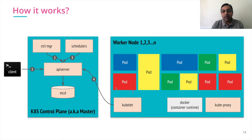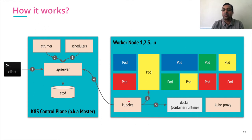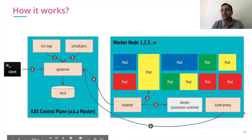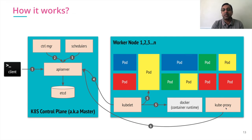Kubelet, which is part of the worker nodes, keeps listening for requests via the API server. When a new request is assigned to a worker node, kubelet picks up that request and uses Docker runtime to spin up new pods and eventually containers. If new pods are spun up, new IPs need to be assigned and routes defined — all that work is done by kubeproxy. Kubeproxy keeps listening for state changes and sets up IP table rules so that pod-to-pod communication can happen easily. That's how the whole Kubernetes architecture works.